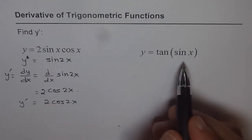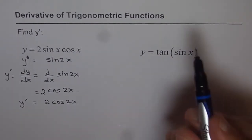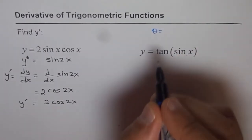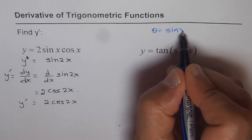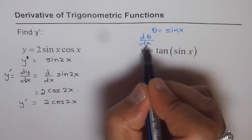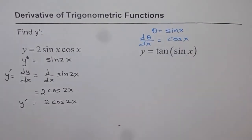Now here, I will try to do it with the help of substitution method. So that is, I will substitute theta as equals to sin x. In that case, d theta dx will be what? Will be cos x, correct?